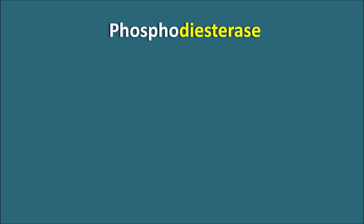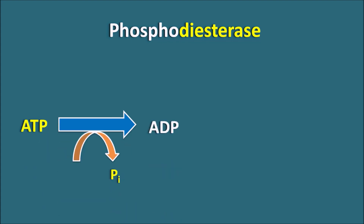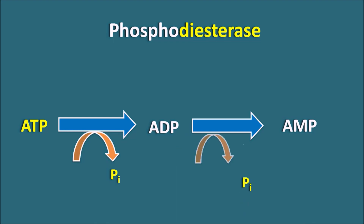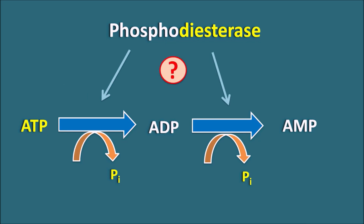So they act on which type of substrates? We know that in many biochemical reactions, ATP is converted into ADP where one phosphate group is removed. This ADP can be further converted into AMP, where again a phosphate group is removed. So in these dephosphorylation reactions where adenosine triphosphate is converted to adenosine diphosphate and then monophosphate, is there any role of the phosphodiesterase enzyme?